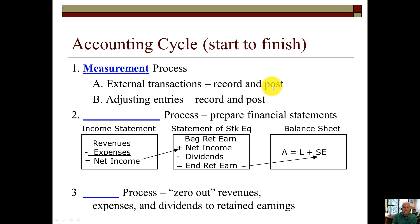Think about the external transactions — the ones we saw in the earlier video on adjusting entries when cash is actually involved. And then sometimes, at the end of the period, we have to post the adjusting entries for the prepayments and the accruals. The next part is the communication process. So Mr. Clean — think about that as measuring and communicating — and this is where we prepare the financial statements.